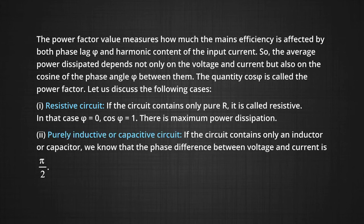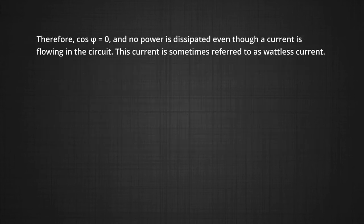Case 2 where we have purely inductive or capacitive circuit. If we take the circuit contains only an inductor or capacitor, we know that the phase difference between voltage and current is pi by 2. Therefore, cos phi equals zero that is no power dissipation. Even though a current is flowing in the circuit, this current is sometimes referred as wattless current. And here it is very important, we will discuss this later also.